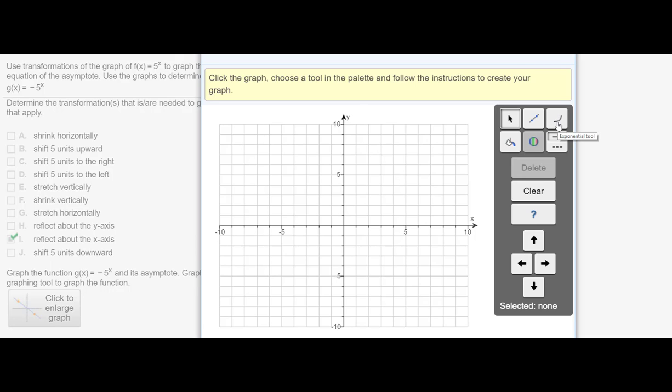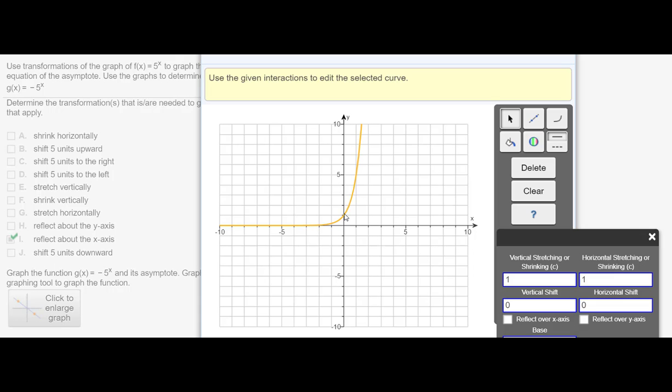The easiest thing to do is to get the exponential tool, and I know 5 to the 0 is 1, so I just click right there, and I get my 5 to the x. Then I want to check reflect over the x-axis, so you see what happens, how it reflects.